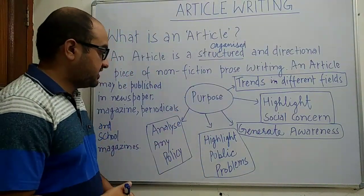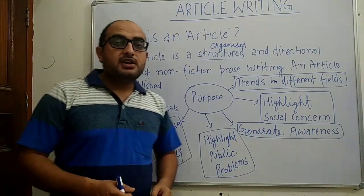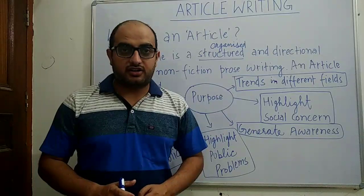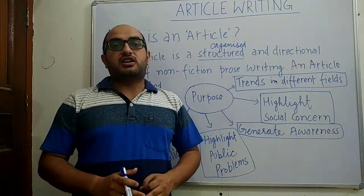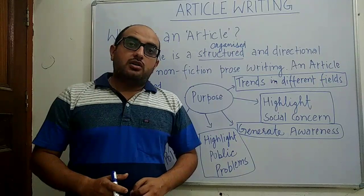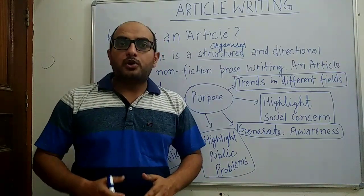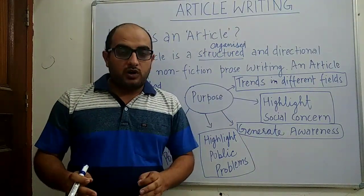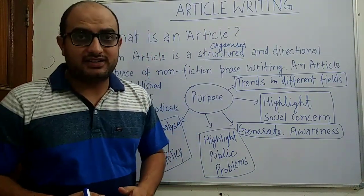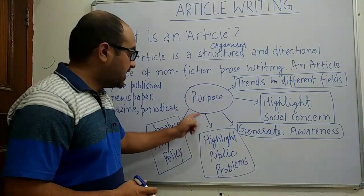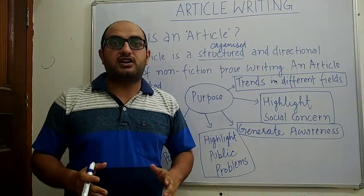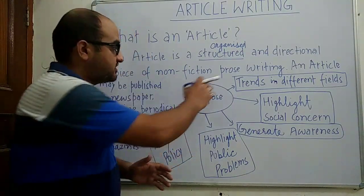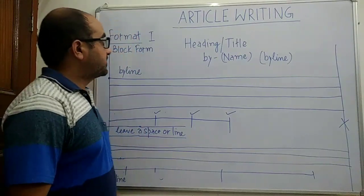The next purpose of article writing is that jab hum kisi social problem ya public problem ko highlight karna chahte hain — for example, overpopulation, pollution, inflation, poverty — is tarah ki issues ko hum article writing mein highlight kar sakte hain. Toh ye the 4-5 aspects of the purpose of article writing.